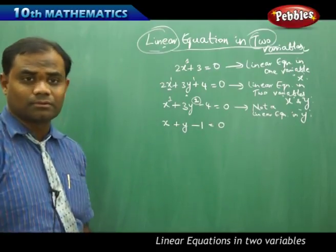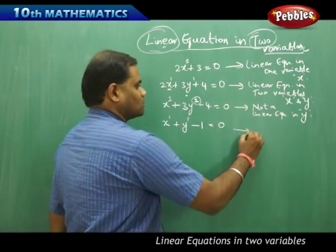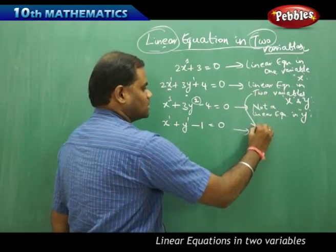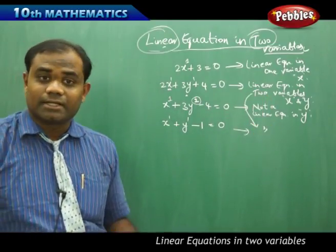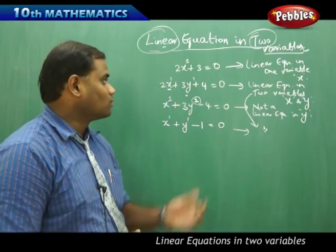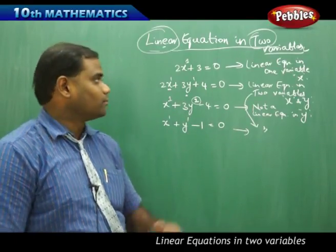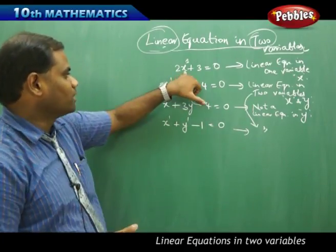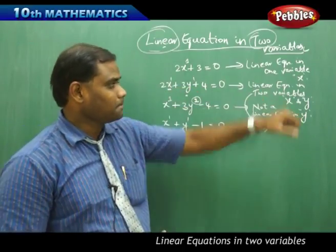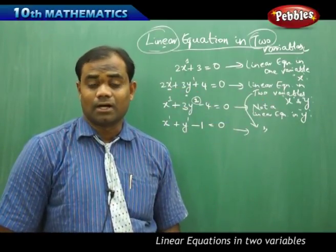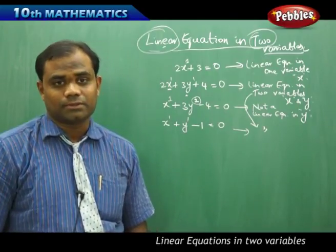This is a linear equation because each of its powers is 1, so this is a linear equation in two variables x and y. This is how we understand the difference between a linear equation in one variable x and a linear equation in two variables x and y.